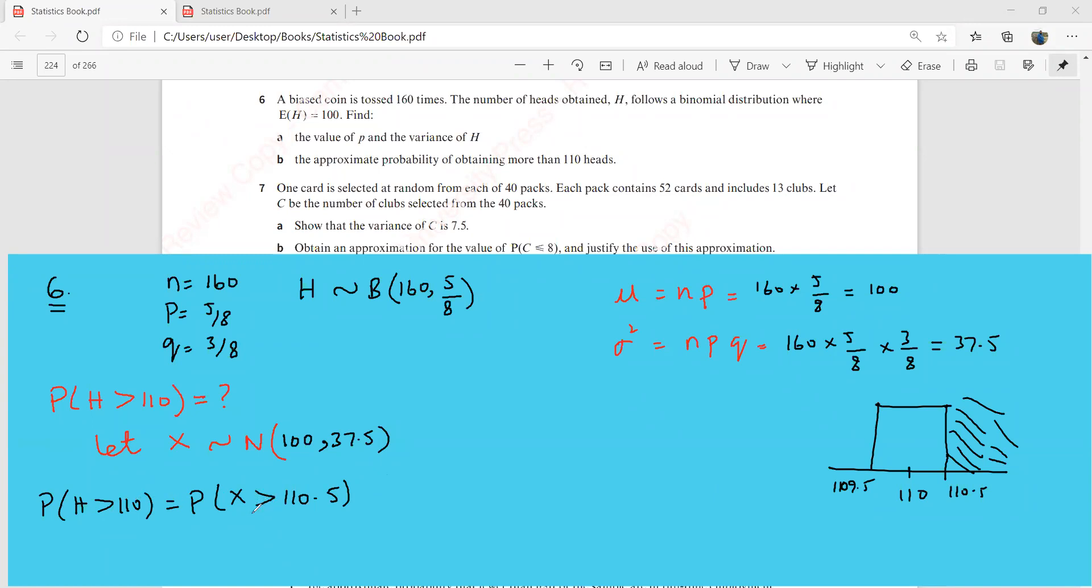Now, once you have introduced, you have got this into the hands of a normal distribution, the rest is a piece of cake for you because you know that now you will be standardizing this. This would now become z is greater than, I'm going to use that formula that z is going to be x minus mu over the standard deviation. So this is going to be 110.5 minus what was the mean here? That is 160 over, oh this is, sorry, the mean is 100. Sorry sorry sorry. So this is 100. Here is the mean.